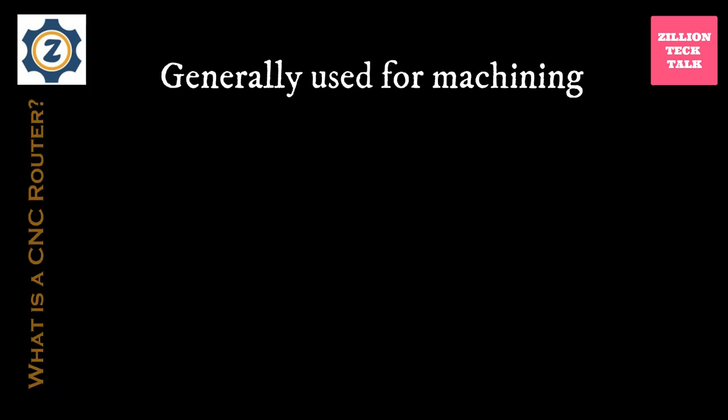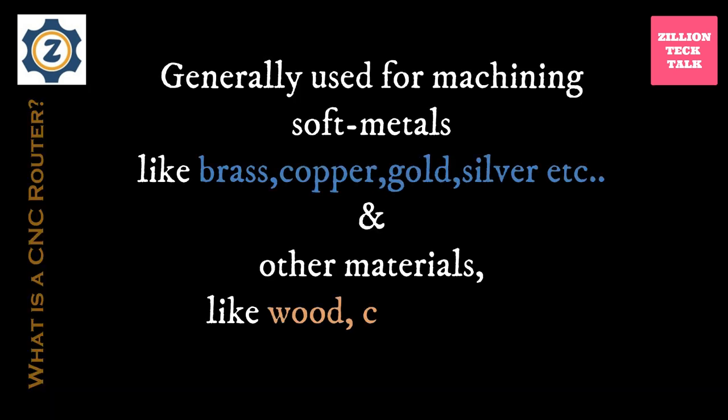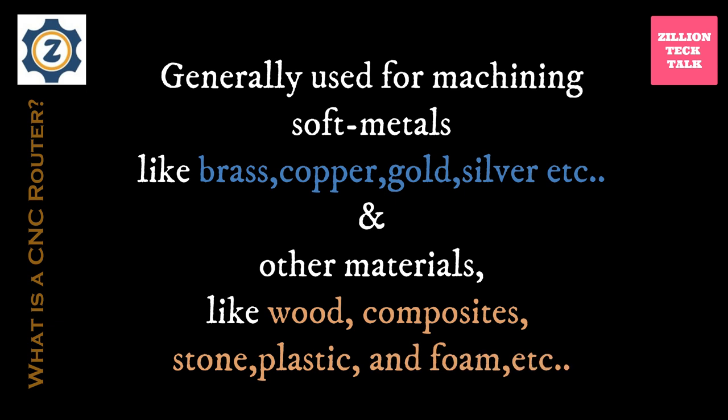CNC routers are generally used for machining soft metals like brass, copper, gold, silver, etc., and also other materials like wood, composite, plastics, and foam.